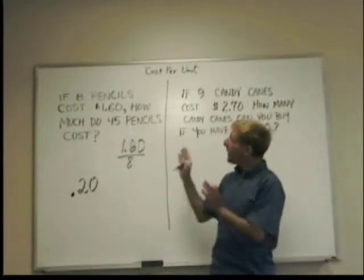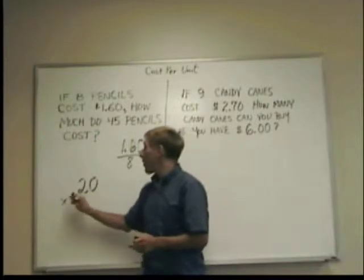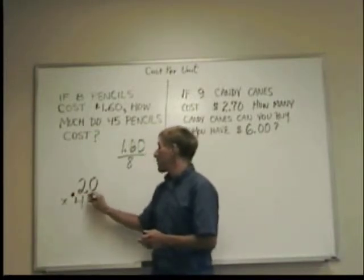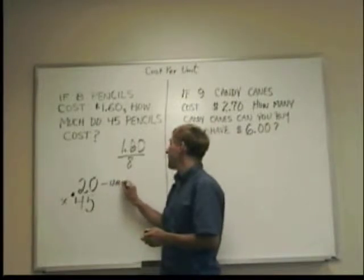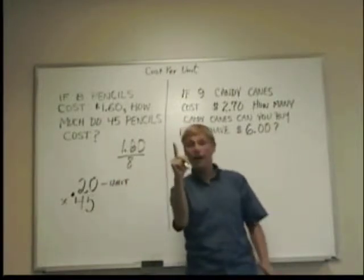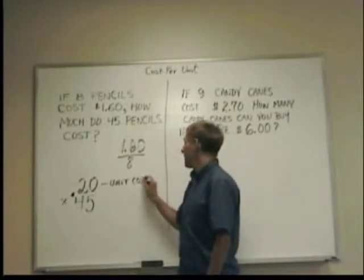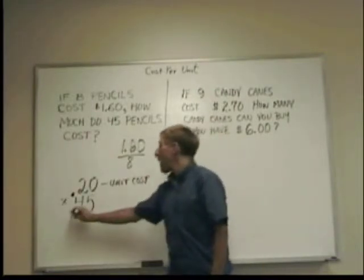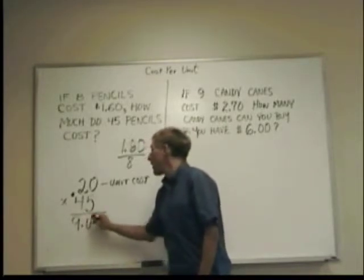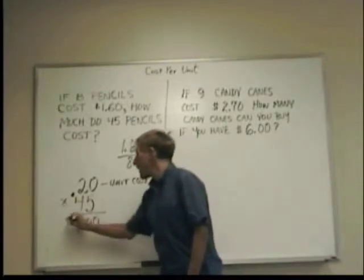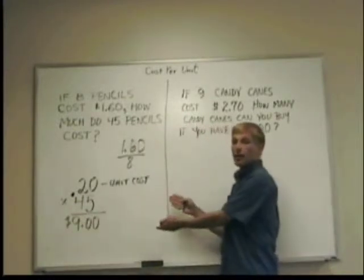Now, you take the twenty cents, and you multiply by the forty-five pencils that you're looking for. Now you know that the unit cost, the cost for one is twenty cents, and you would get nine dollars. And that's how you would answer this first question using unit cost.